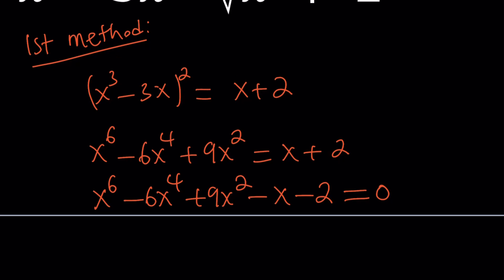So this method obviously is not going to give us anything solid, unless there is a method I'm not able to see at this point. I just wanted to share it with you. The first method was to square both sides, and not all methods have to lead to results — sometimes you try a method and it doesn't work, and that's perfectly fine. Let's go ahead and take a look at the second method.